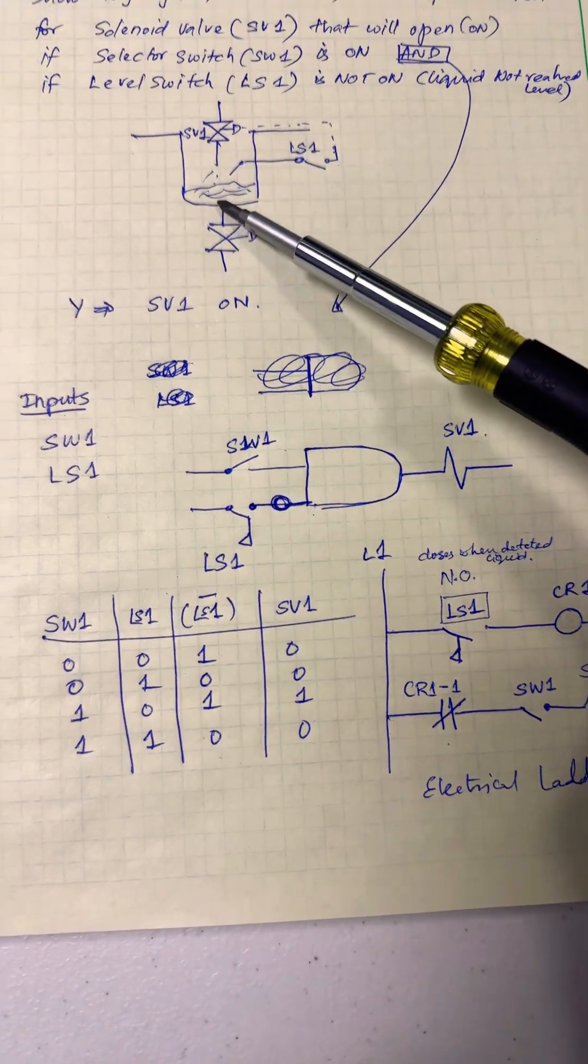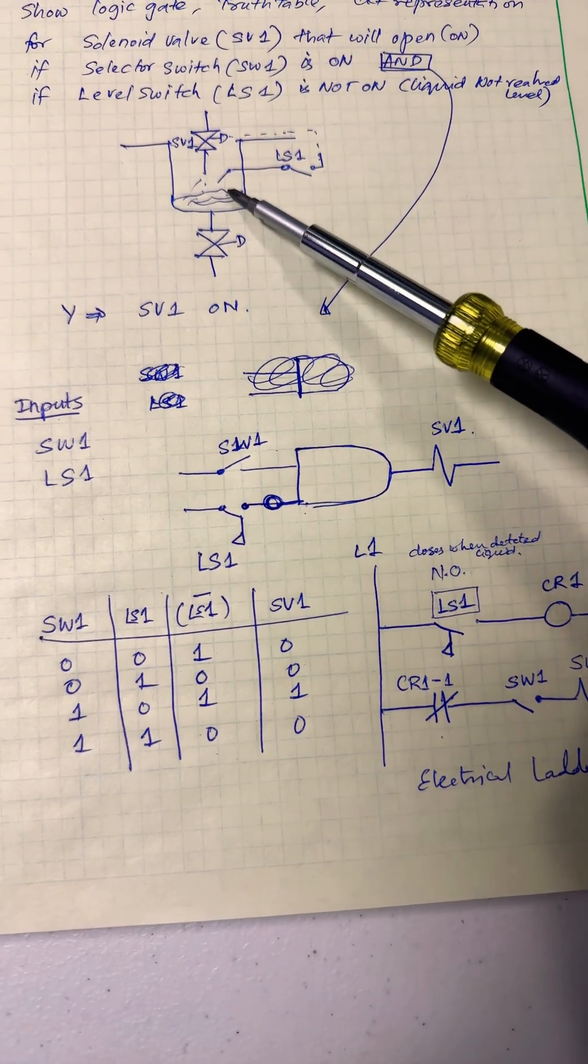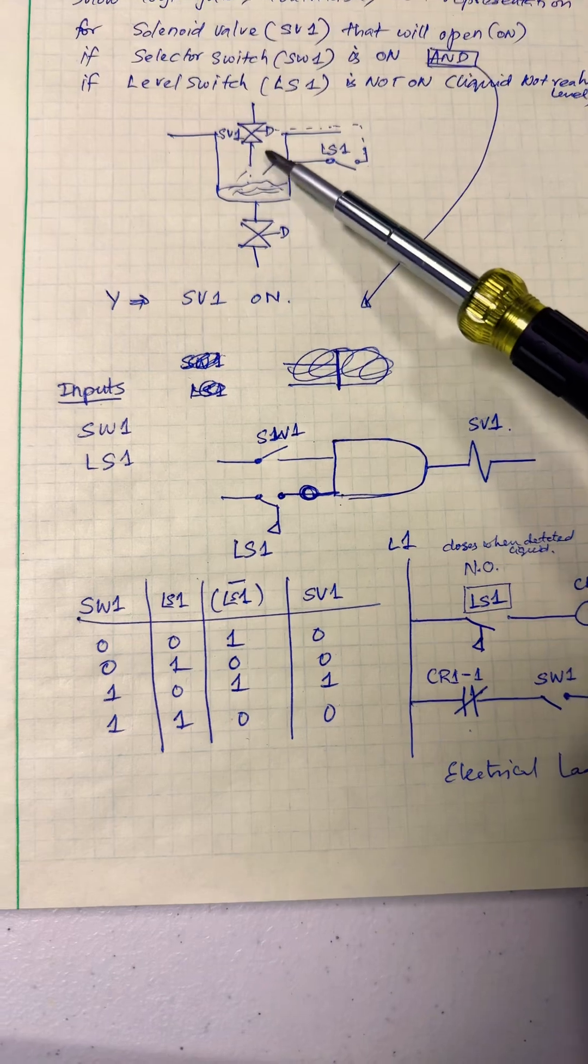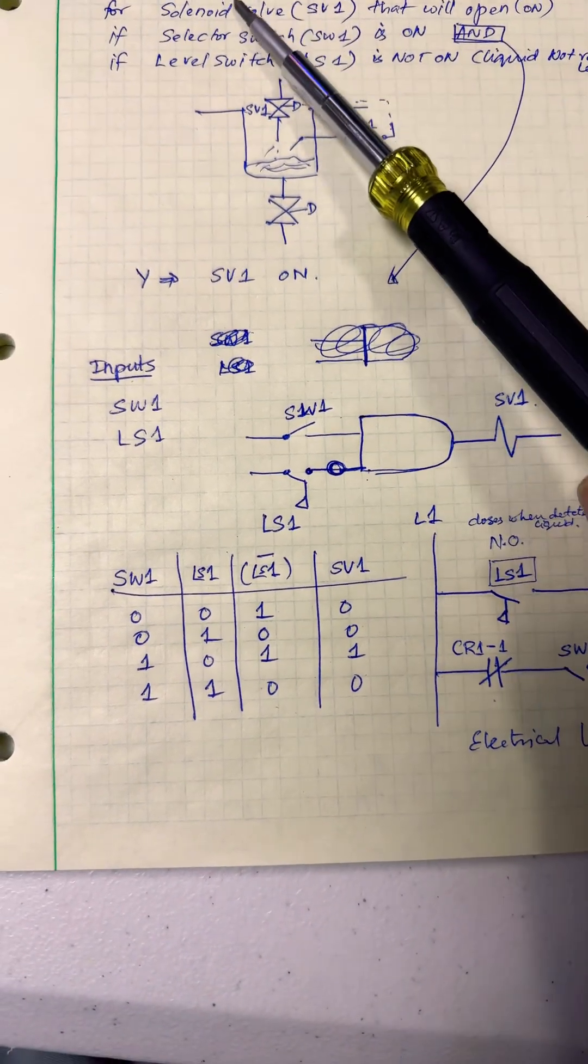We want the tank to be filled until this liquid level switch is made. Once the level switch is made, we don't want the valve to come on.